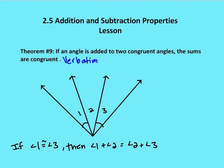Theorem number nine is just a takeoff on the same theorem from before, but now we're talking about the theorem in terms of angles. So if an angle — angle two — is added to two congruent angles, angle one and three, then their sums are congruent. I mark the congruence by having one rounded arc here and one rounded arc here. So two is congruent to itself, and I know that angle one plus two is congruent to two plus three.